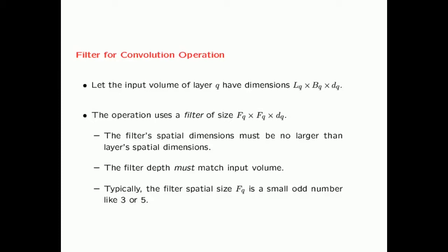The depth of the filter DQ must match that of the input volume for a convolutional operation to occur. Typically, FQ is a small odd number like 3 or 5. In recent years, there has been an increasing trend toward using filters of size 3. There are also some special applications where it's possible to have filters with FQ equal to 1.